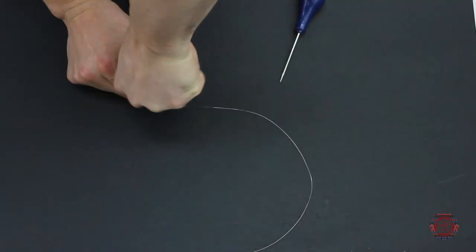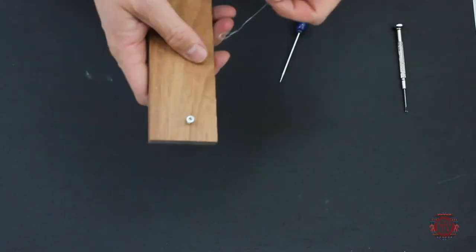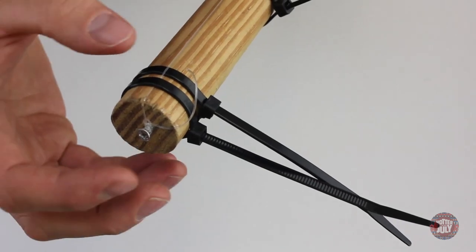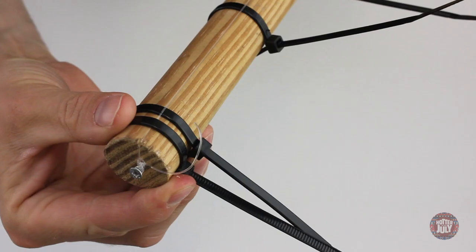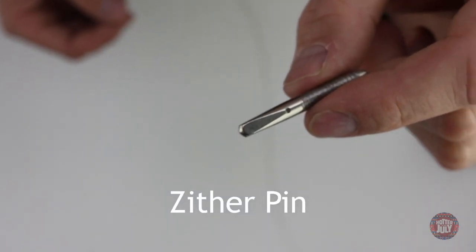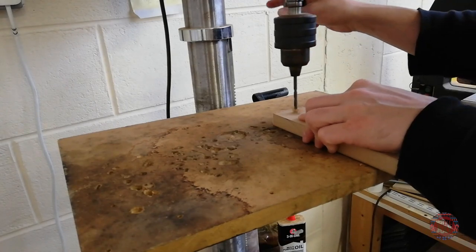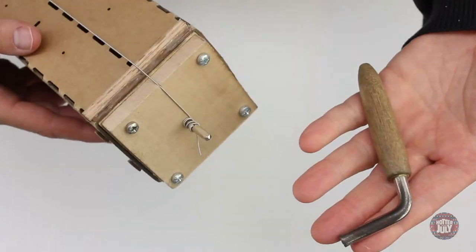Next, the other end of the string must be secured. The simplest instruments, like the ones shown shortly, can simply be tied at this end also, but there are a variety of mechanisms available for this purpose. Zither pins are a type of fine threaded screw that are hammered into wood and can be finely adjusted with a tuning wrench.